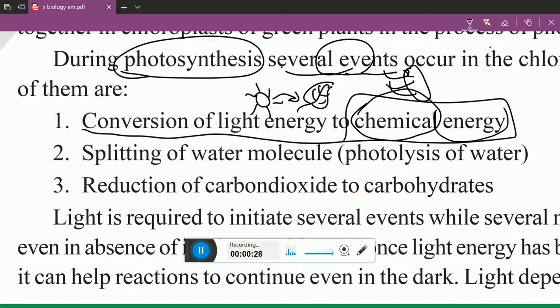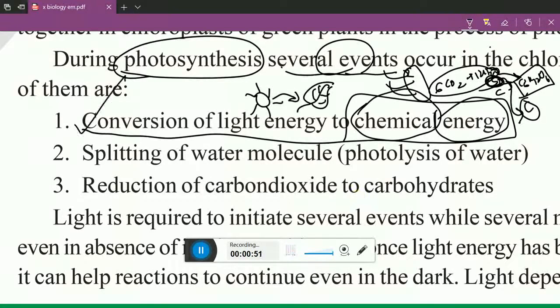Chemical energy means here we have an equation about photosynthesis: 6CO2 plus 12H2O in the presence of sunlight and chlorophyll. Then due to sunlight these chemicals are transferring into chemical energy C6H12O6. This is a carbohydrate. So with the help of sunlight chemicals are formed. This is the first lesson: conversion of light energy to chemical energy.